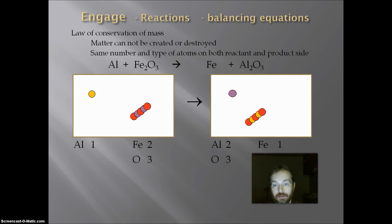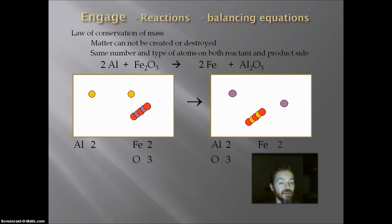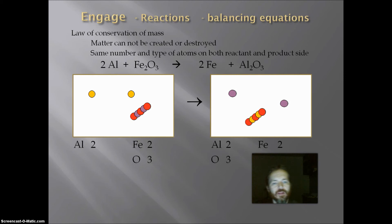Now that I've got my chemicals laid out, I can start balancing them. The things that do not balance are the metals, the iron and the aluminum. So if I put two aluminum on the reactant side, I now have two aluminum and the aluminum is balanced. And for the iron, if I add an additional iron so I have two iron, now I have two iron on each side. So within my reaction on each side, there are two yellow aluminums, two purple irons, and three red oxygens. This now follows the law of conservation of mass and it's a balanced equation.